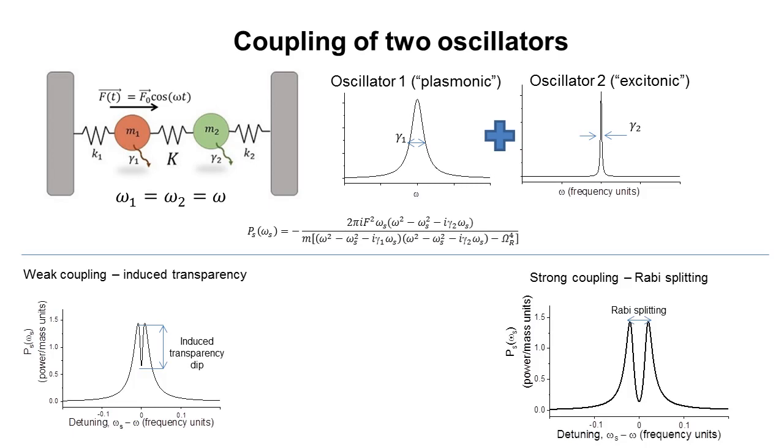If the coupling strength will be higher than the sum of all initial damping rates, then the resulting spectrum will split into two separate peaks, which in the quantum case is called Rabi splitting, and the distance between two peaks will be proportional to the coupling strength. However, in some cases, it is not possible to separate these modes from each other, and this mode is called intermediate coupling.